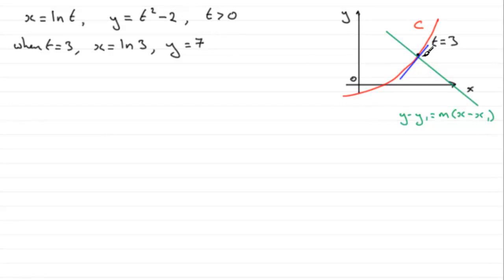So we know the coordinates then at this point here where t equals 3 are the natural log of 3 and 7. So I've got my x1, y1 values.